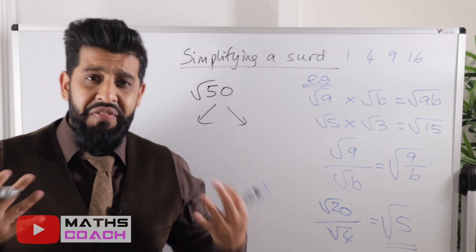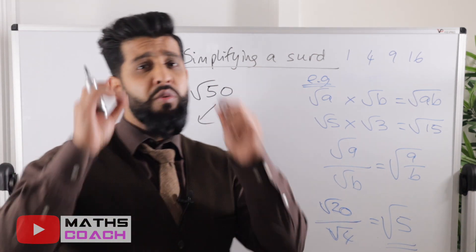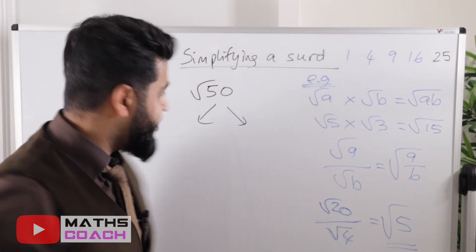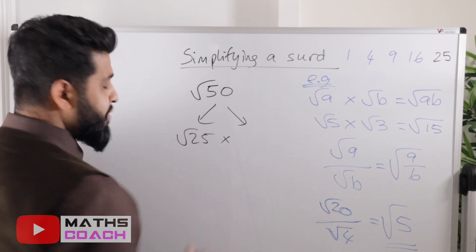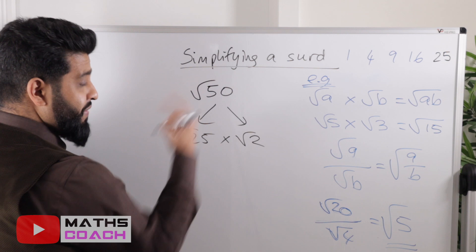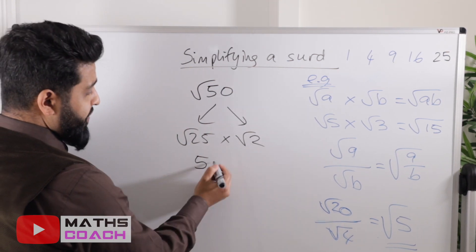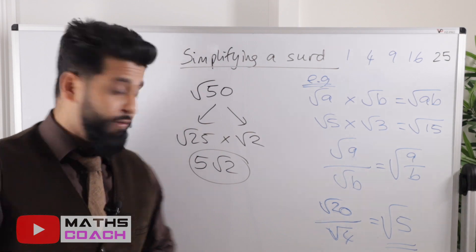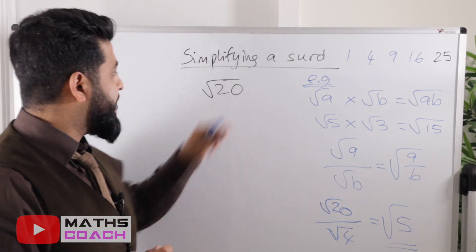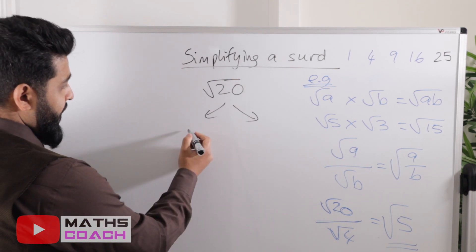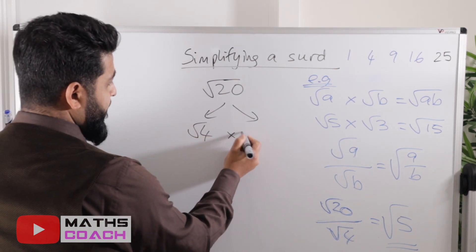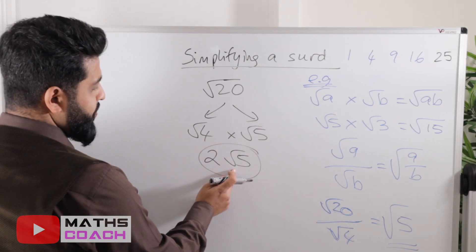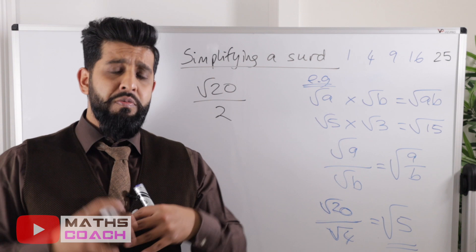This next one is √50. We can divide 50 by 5, but 5 is not a square number. The square number that divides 50 is 25. So √50 = √25 × √2 = 5√2. Now let's do √20: the largest square number that goes into 20 is 4, so √20 = √4 × √5 = 2√5.